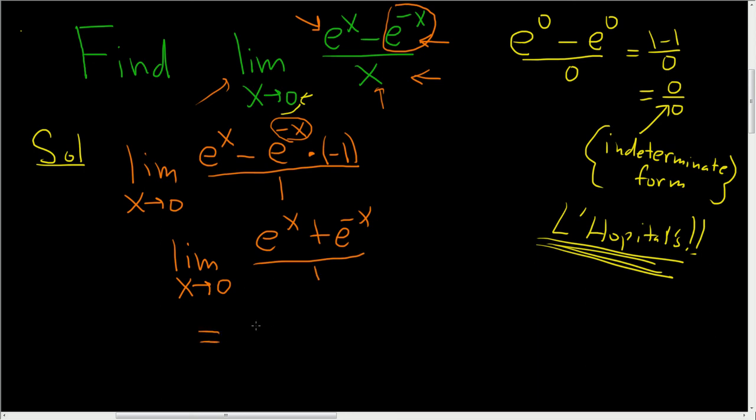So now we can plug in 0. So we get e to the 0 plus e to the 0 over 1. I won't write it this time. So we get 1 plus 1, which is 2. So the final answer is 2.